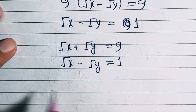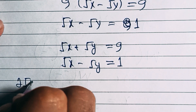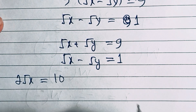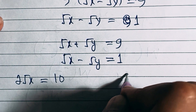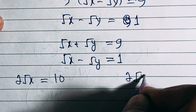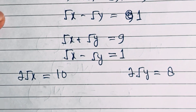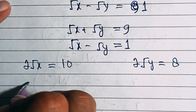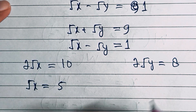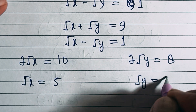Now if we add these two equations we get 2√x = 10, and if we subtract these two equations we get 2√y = 8. From here we have √x = 5 and √y = 4.